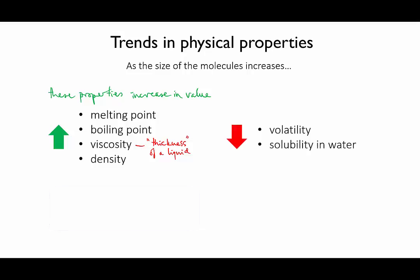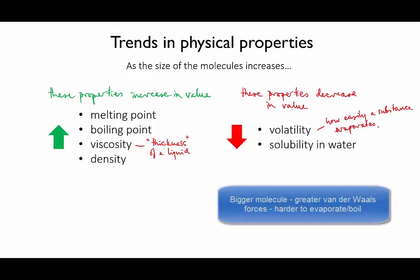Going in the other direction, volatility, which is how easily something evaporates, decreases as organic molecules get bigger. This also has to do with intermolecular forces. If the molecules are bigger, then they have greater van der Waals forces, which means they're more attracted to one another. This means they're less likely to evaporate, so their volatility is lower. And this also links with a higher boiling point.